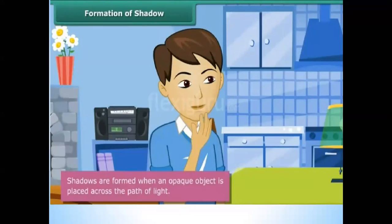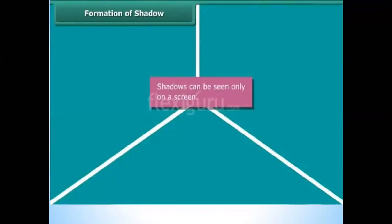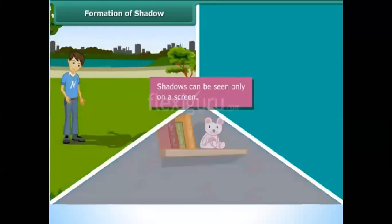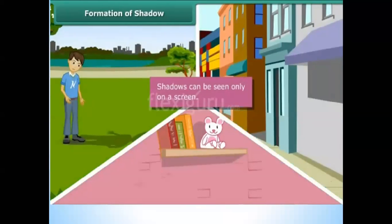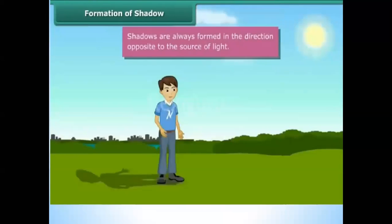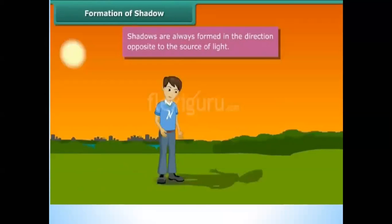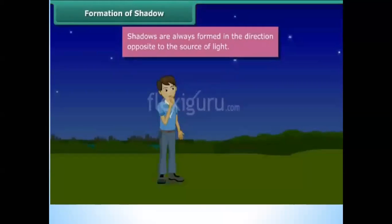Shadows are formed when an opaque object is placed across the path of light. Shadows can be seen only on a screen — the ground, walls of a room, buildings, and other such surfaces act as screens for shadows. Shadows are always formed in the direction opposite to the source of light. In the morning, since you were facing the sun, the shadow was behind you. In the evening, the sun was behind you, causing the shadow to form in front of you. When the sun sets, there was no light, hence there were no shadows.